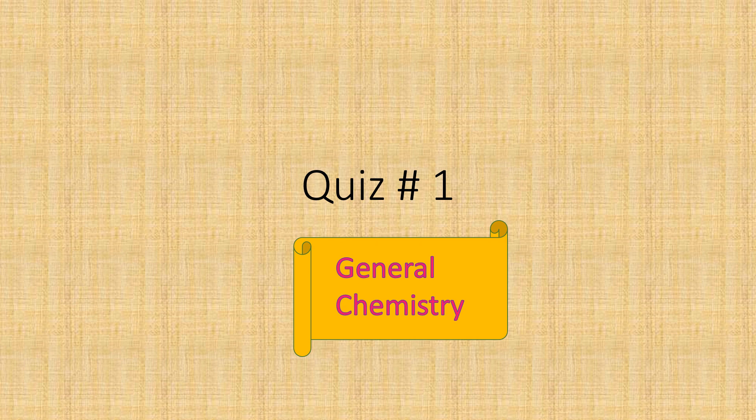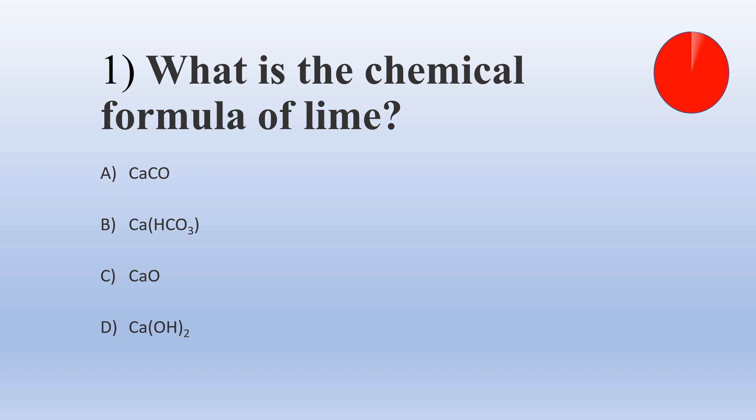Dear students, welcome to the channel. This is the quiz on general chemistry. There are total 10 questions and you will get 30 seconds to answer each question. So let us start. The first question is: what is the chemical formula of lime? A) CaCO, B) Ca(HCO3), C) CaO, and D) Ca(OH)2.